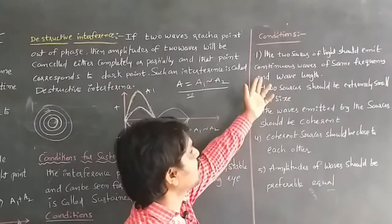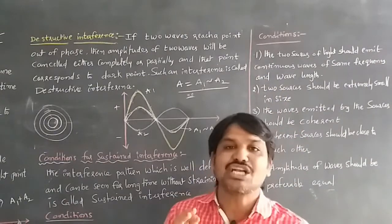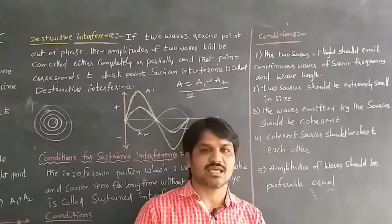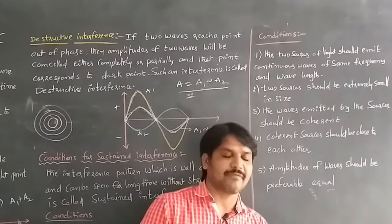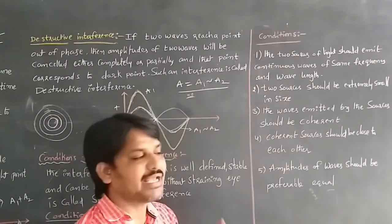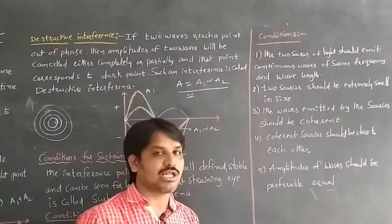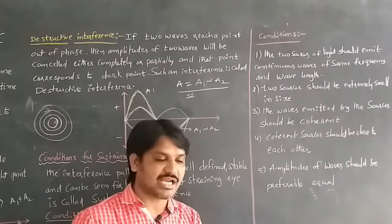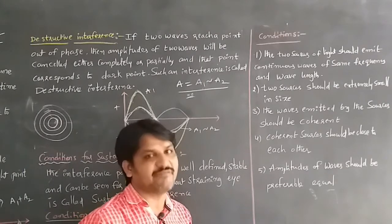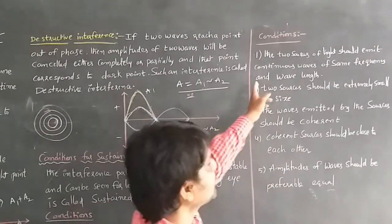The first condition is: the two sources of light should emit continuous waves. When the two continuous waves are coming from the source, then the eye does not strain and the connection will be stable. The light will be stable and well-defined.